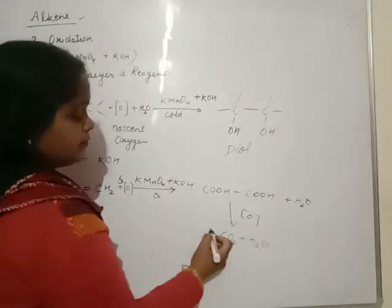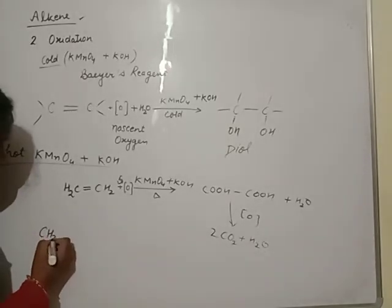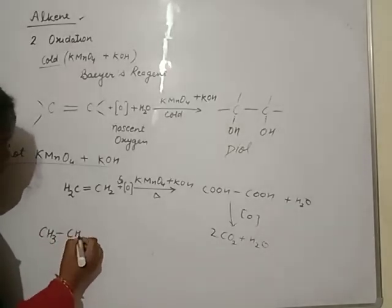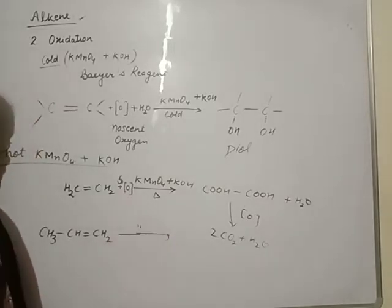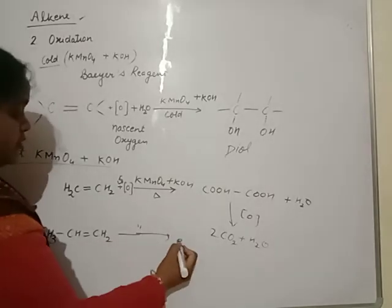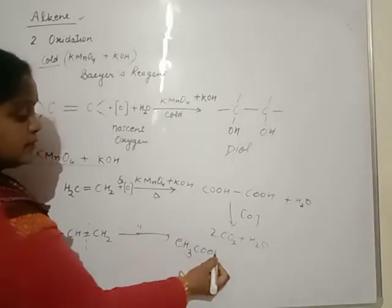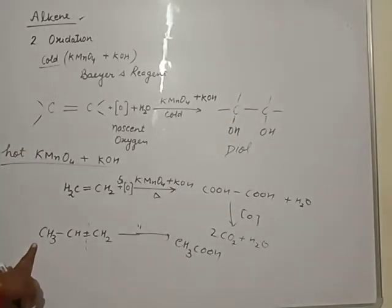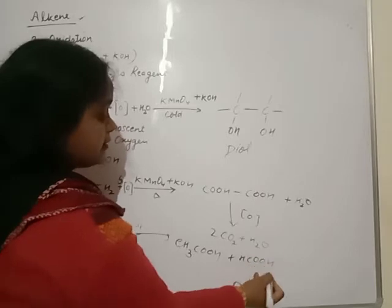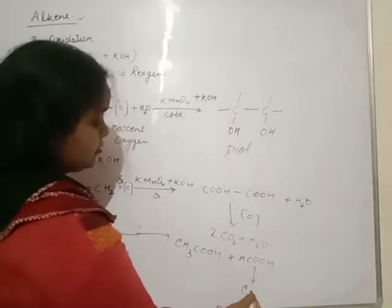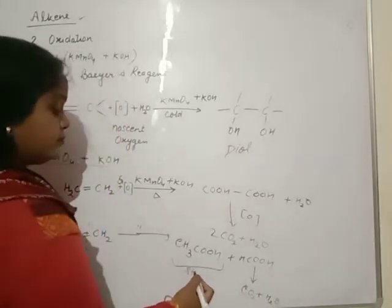If we have this group, then what happens? By using this nascent oxygen required, first of all this bond will be totally broken. It will give two acids, one acid with two carbons, one acid with one carbon. And this is further oxidized to give carbon dioxide and water. This will remain stable.